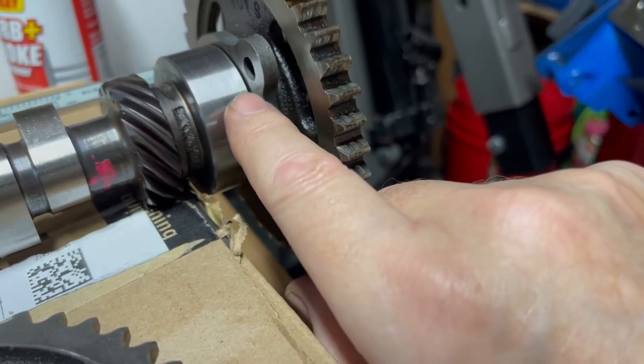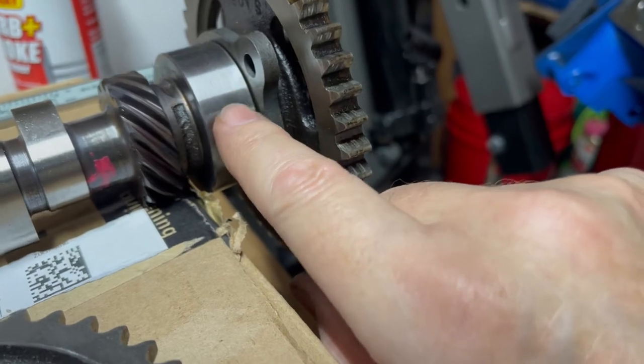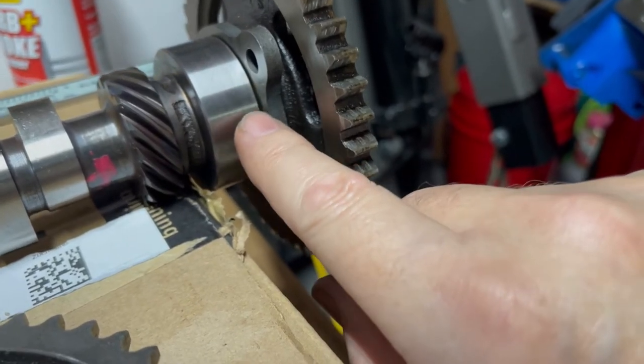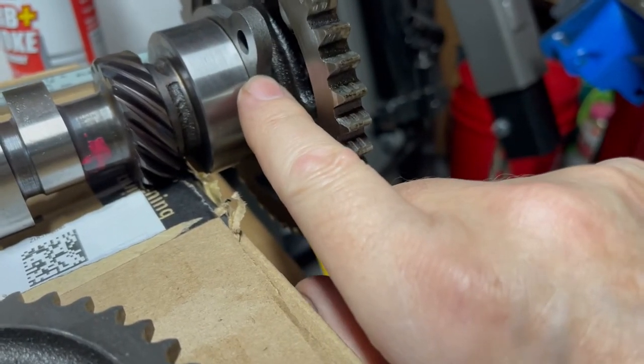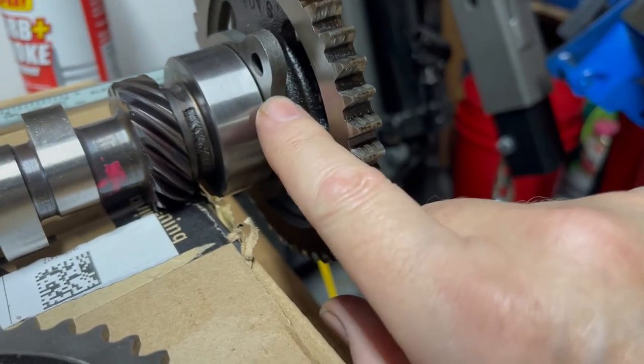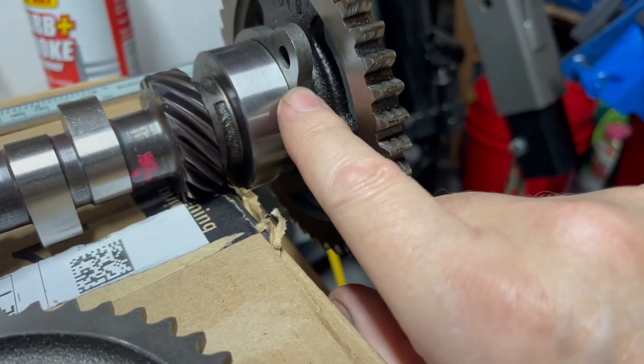This is supposed to have 2 to 8 thousandths of an inch clearance. When I measure this, it's 40 thousandths. So that's why there was so much play in there.